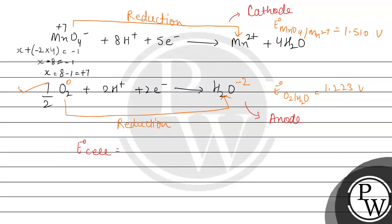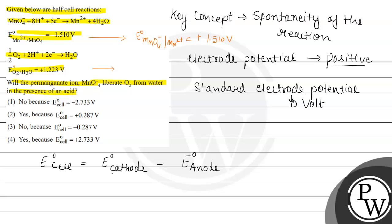Now we can find E°cell using the formula: E°cell = E°cathode − E°anode = 1.510 − 1.223 = 0.287 volt. Since the value is positive, the reaction is spontaneous, which means permanganate ion will liberate O₂ from water in the presence of acid. So the answer is option 2. Options 1, 3, and 4 are incorrect.